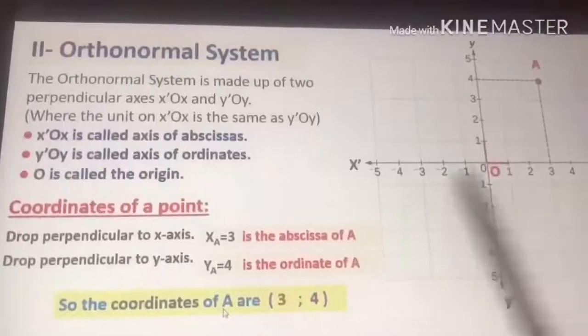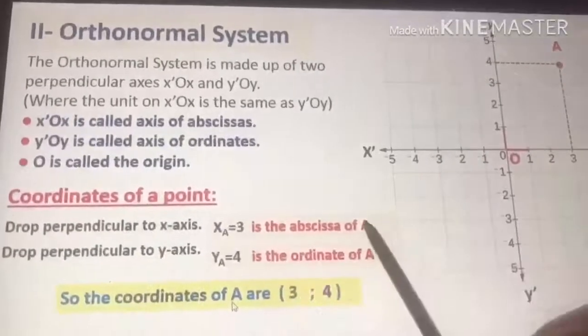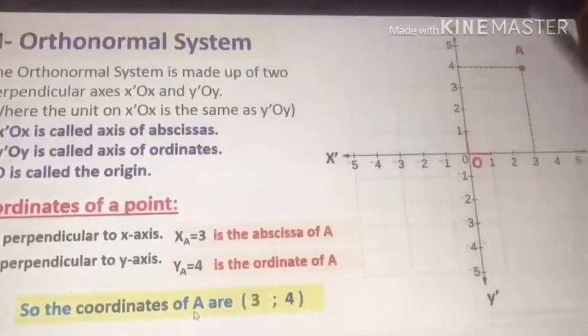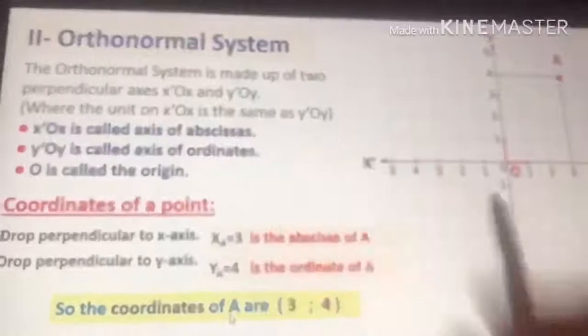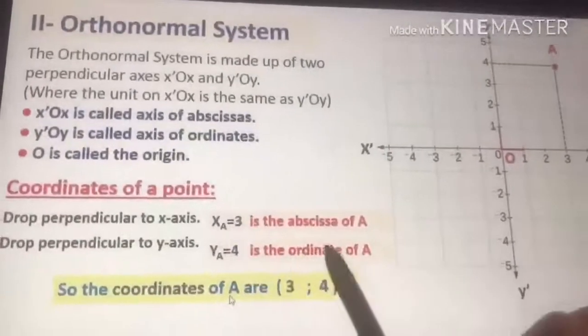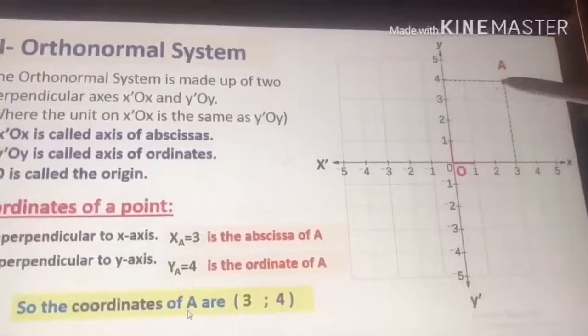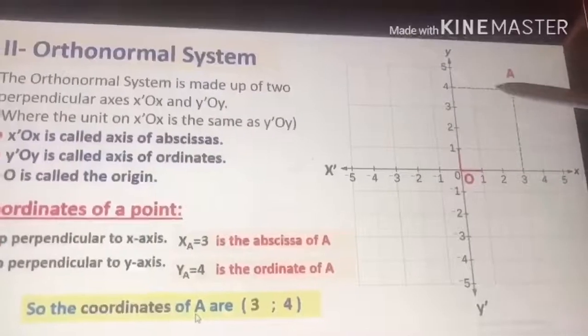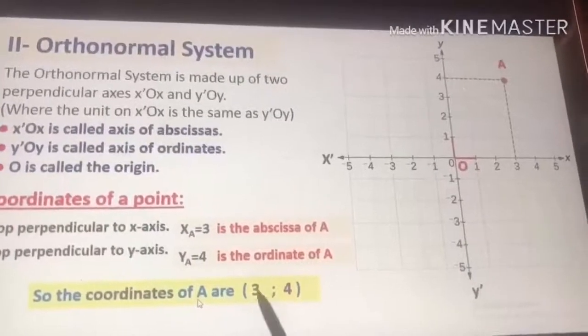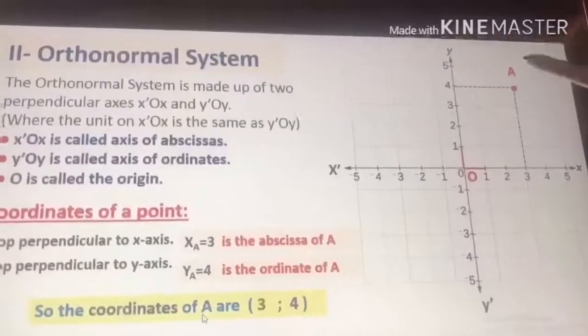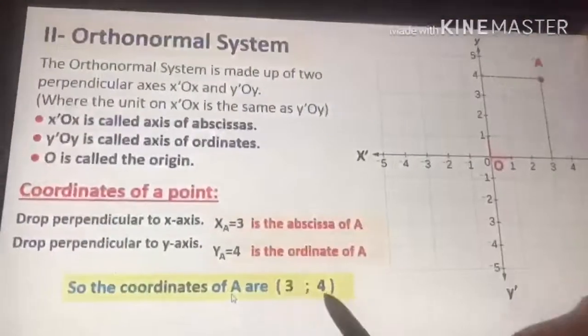Then we talked about the coordinates of a point. We said that coordinates consist of two words, which are the abscissa and the ordinate. Any point located in the orthonormal system has two coordinates, which are abscissa on the x-axis and ordinate on the y-axis. We took an example A, how to find its coordinates. We make a perpendicular line to the x-axis, perpendicular line to the y-axis. First we say the x-axis, the abscissa 3, and the ordinate we put semicolon, we put 4, its ordinate. So the coordinates of A are (3, 4).